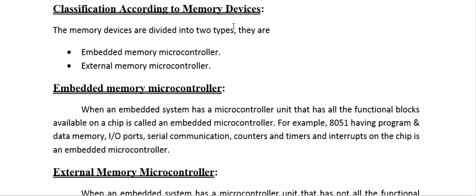Classification according to memory devices: there are embedded memory microcontrollers and external memory microcontrollers. When an embedded system has a microcontroller unit with all functional blocks available on a single chip — including program and data memory, I/O ports, serial communication, counters, timers, and interrupts — it is called an embedded microcontroller. The 8051 is an example.